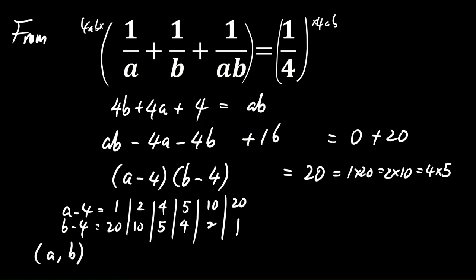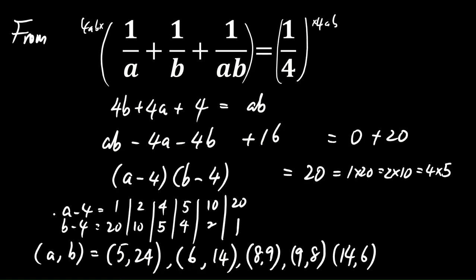Meaning that in this case, (a, b) will equal (5, 24), (6, 14), (8, 9), (9, 8), (14, 6), or (24, 5). So there are a total of 6 solutions.